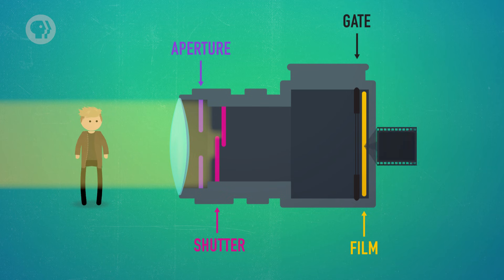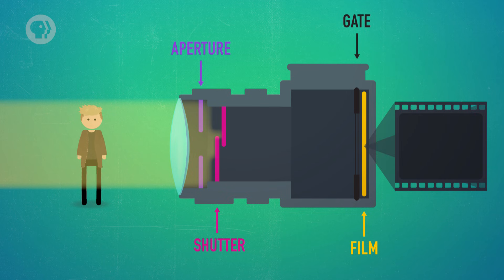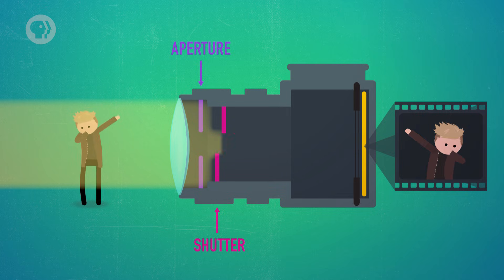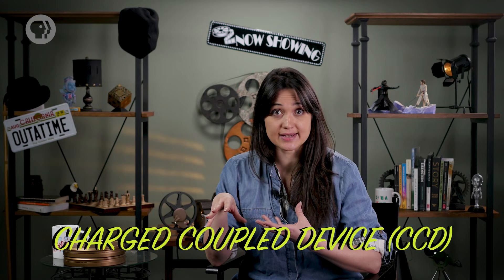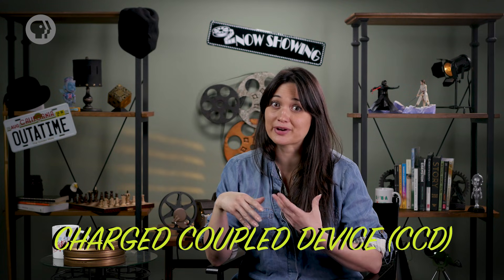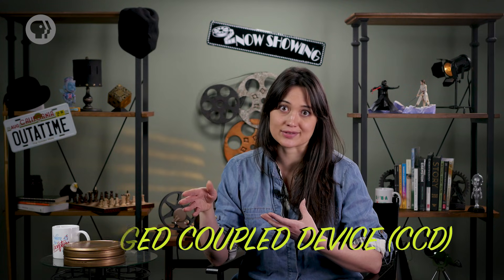How light gets turned into an image depends on what kind of camera you're using. In a film camera, the light hits the chemical-coated film strip at an opening called the gate, which exposes it so it retains an image. In a digital camera, the light heads to an electronic sensor, which translates the light energy into a digital image. The camera filming me right now has what's called a complementary metal oxide semiconductor, or CMOS sensor. Other digital cameras might have a charged coupled device, or CCD, which uses more power but produces better images than earlier CMOS sensors.